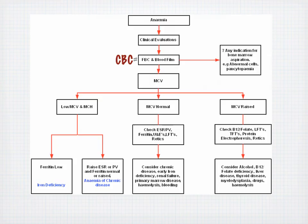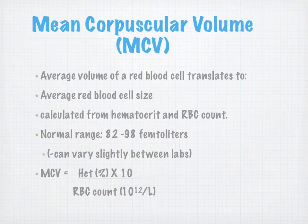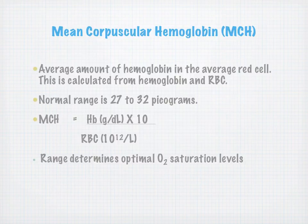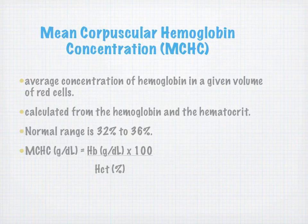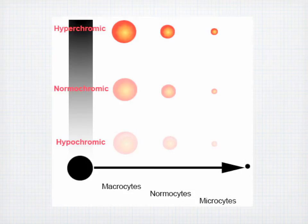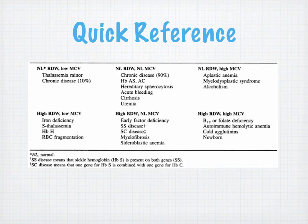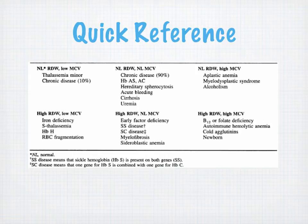Going back to mean corpuscular volume — it's the average size of the red blood cell. Volume and size are essentially the same thing here. There's a quick reference table: normal RDW with low MCV, normal RDW with normal MCV, and normal RDW with high MCV — a nice quick reference for what might be going on.